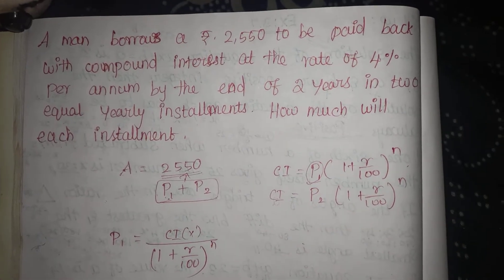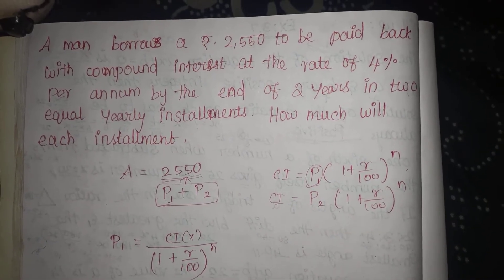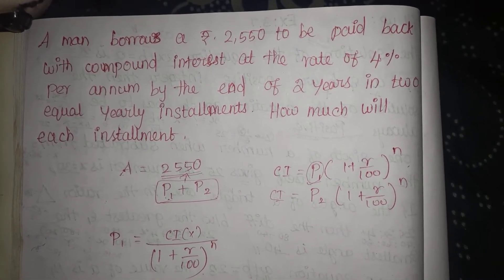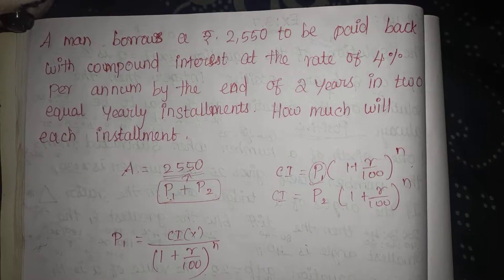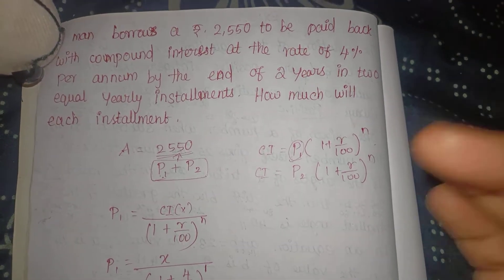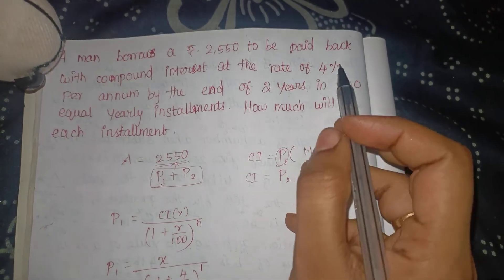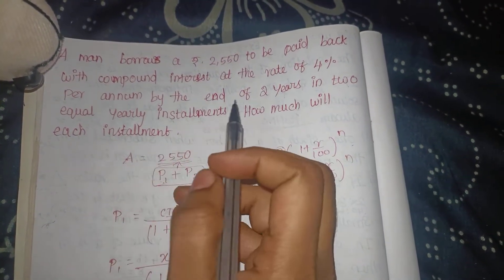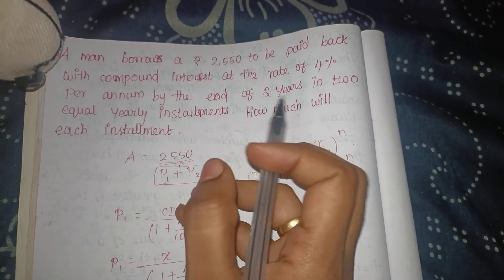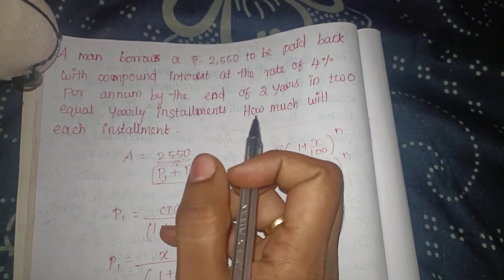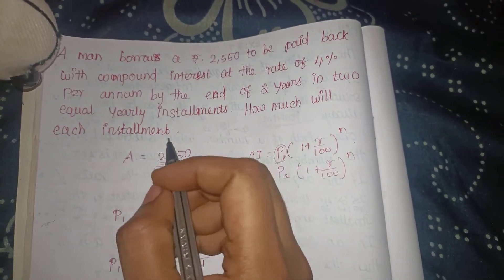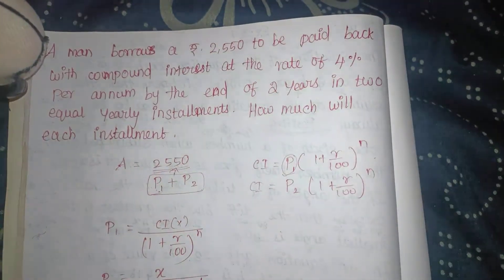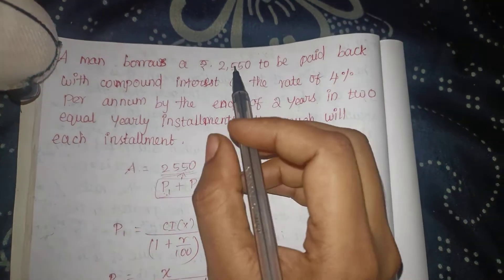A man borrows ₹2550 to be paid back with compound interest at the rate of 4% per annum by the end of 2 years in 2 equal yearly installments. Each installment is the same, so the question is how you can find it.